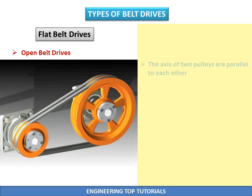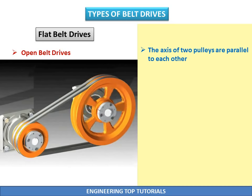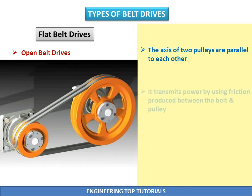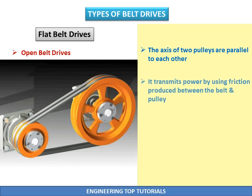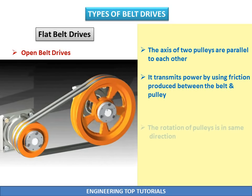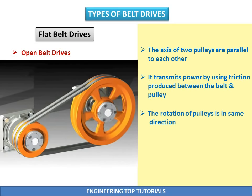Open belt drive: In open belt drives, the axes of two pulleys are parallel to each other. It transmits power by using friction produced between the belt and pulley. The rotation of pulleys is in the same direction.